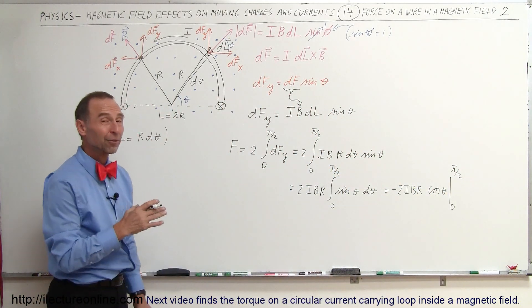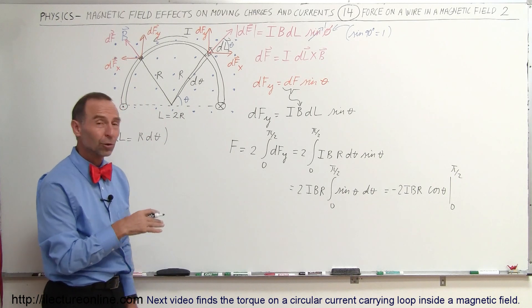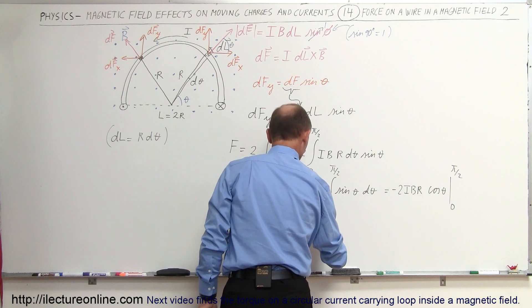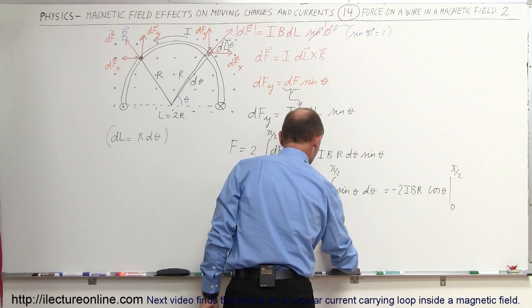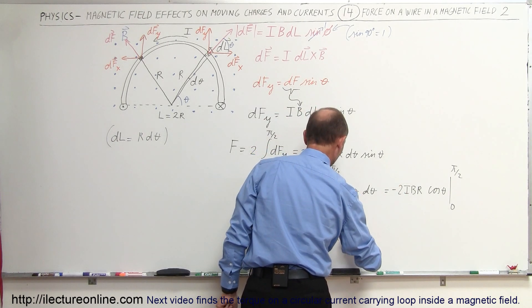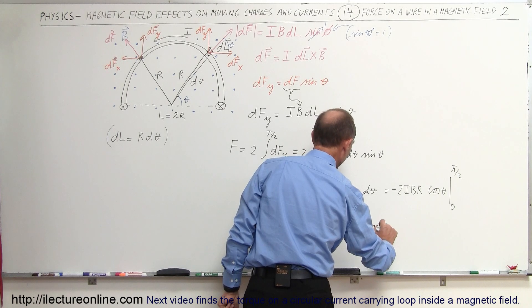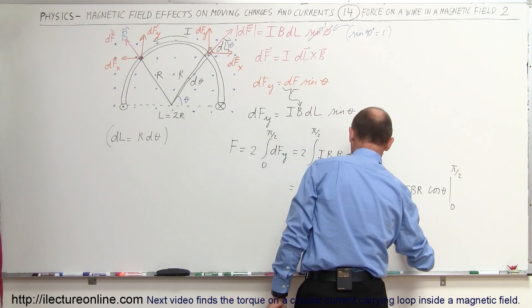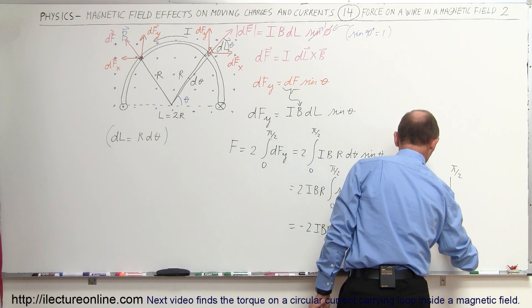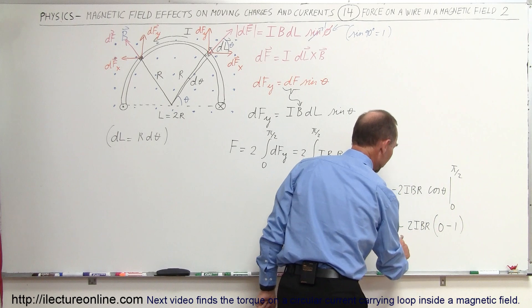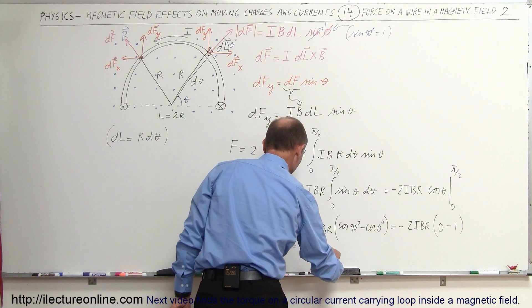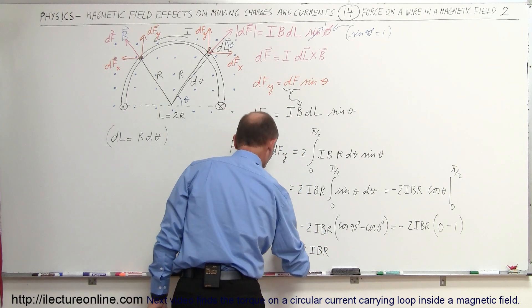Plugging in the upper limit: cosine of π/2 is 0. Lower limit: cosine of 0 is 1. So this equals −2iBR times (0 − 1), which equals −2iBR times −1, and the two negatives make a positive. The result is 2iBR — that is the total force on that wire.